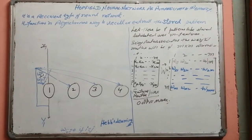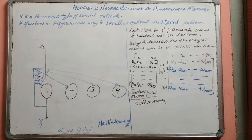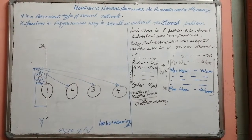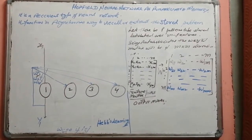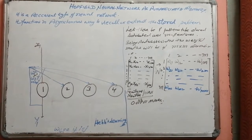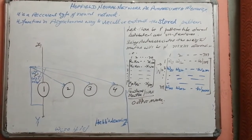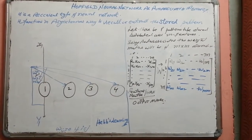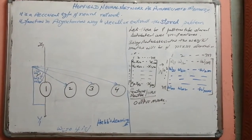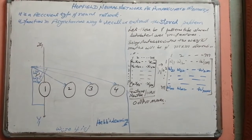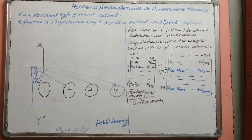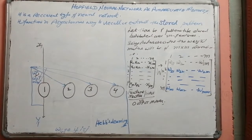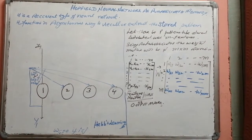Good morning all. Today we are going to cover the last topic under associative memories, that is the Hopfield neural network. Hopfield neural network falls under the recurrent type of neural networks and functions according to the HAPS rule that we studied earlier, which was used in case of auto-associative memories as well as for bi-directional associative memories.